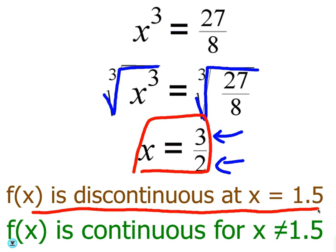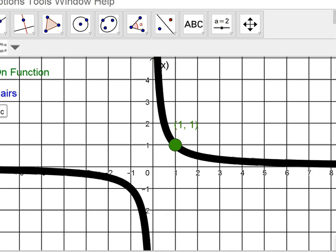Once you figure out where it's discontinuous, you'll know it's continuous everywhere else. Again, the bottom is the only thing that's going to influence a normal rational function. So, everywhere but at x equals 1.5, it's going to be continuous. I'm going to show you the graph of this one as well.